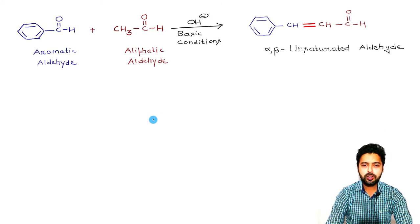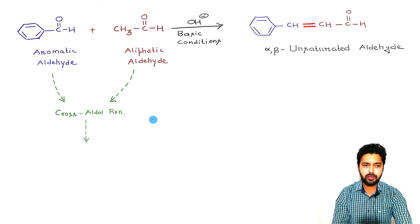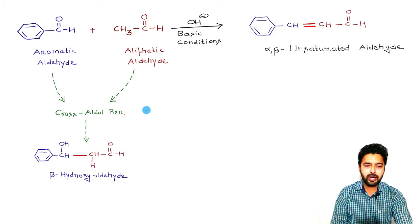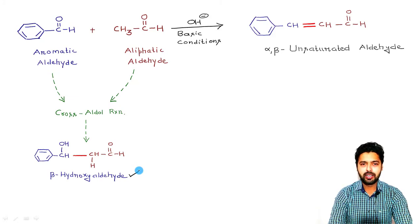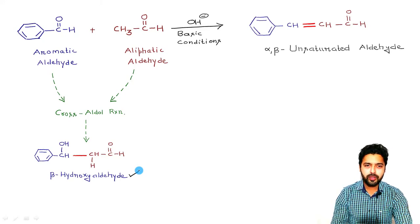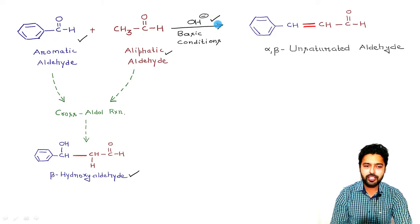Now if we talk about the very first reaction in detail, we will see that the first reaction will be between this aromatic aldehyde and this aliphatic aldehyde molecule. This will be a cross aldol type of reaction and it will give a beta-hydroxy aldehyde. When we add this aromatic aldehyde to this aliphatic aldehyde molecule under basic conditions, it will undergo a cross aldol type of reaction resulting in the formation of this kind of beta-hydroxy aldehyde.